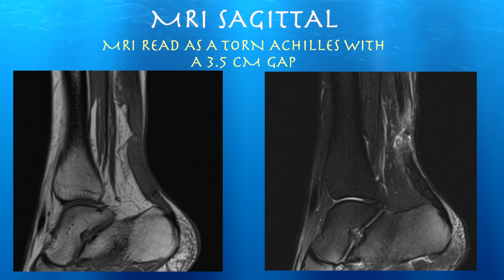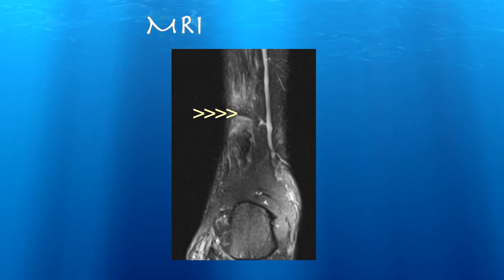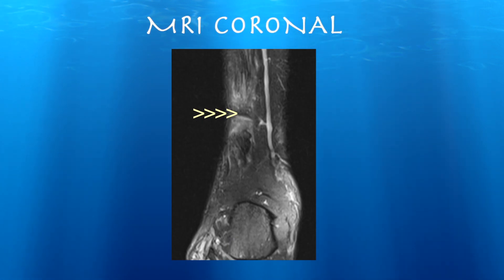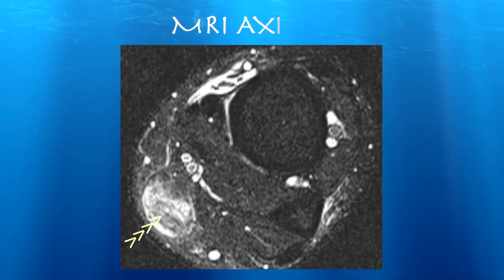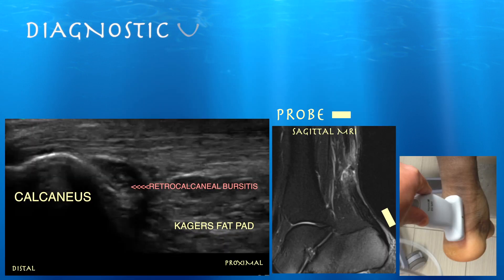Here are some sagittal MRIs where you can clearly see a tear, easier to see on the fat-saturated image on the right where you have all that signal. It was read as a gap of about three and a half centimeters. Here's an axial view where you can see all that signal within the Achilles consistent with a tear.